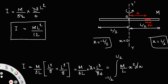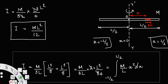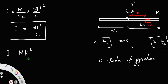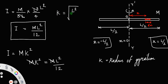Now, how will you find the radius of gyration? If m is the mass of the rod and k is the radius of gyration, then mk² equals the moment of inertia. We already found the moment of inertia is ml²/12. Cancelling m from both sides, k² = l²/12, so k equals the square root of l²/12. Since root 12 = 2√3, the radius of gyration k equals l divided by 2√3.